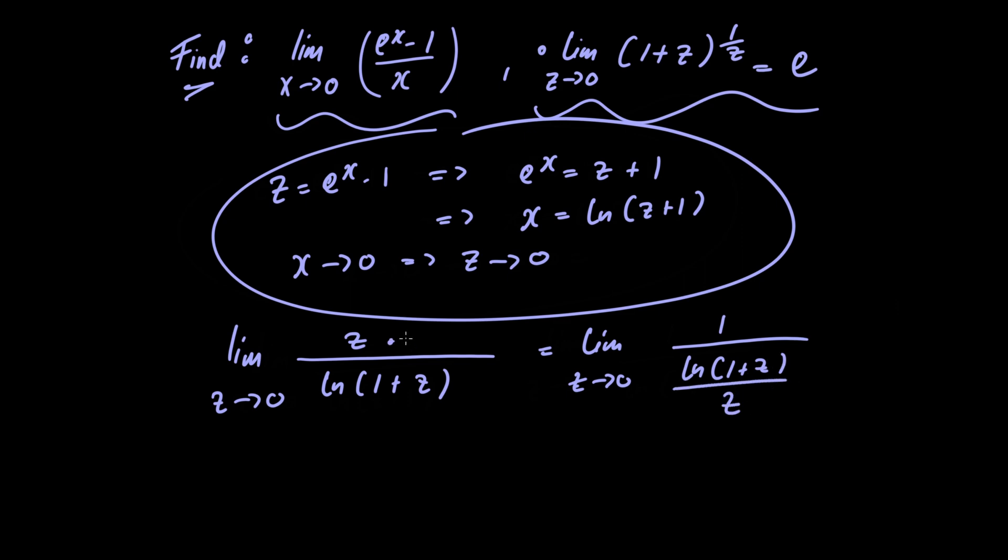We've multiplied both parts by 1/z. This equals the limit as z approaches 0 of 1 divided by ln[(1 + z)^(1/z)]. Now it's clear why we divided by z—it was so we could bring it up as an exponent.